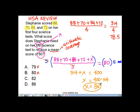So what does this mean? Stephanie should get a score of 86 on her fifth science test so that she can raise her average from 78.5 to 80. Now, how can we check if our answer is correct?